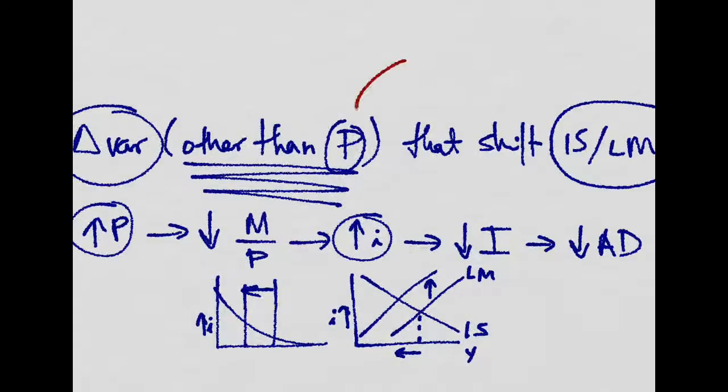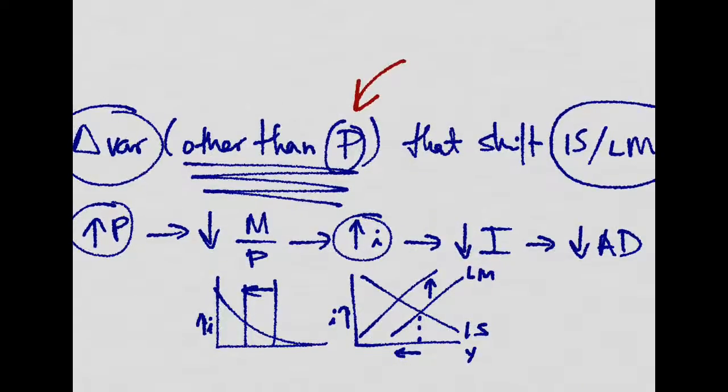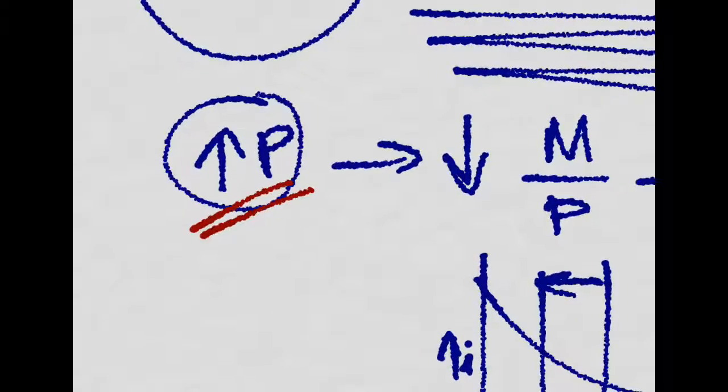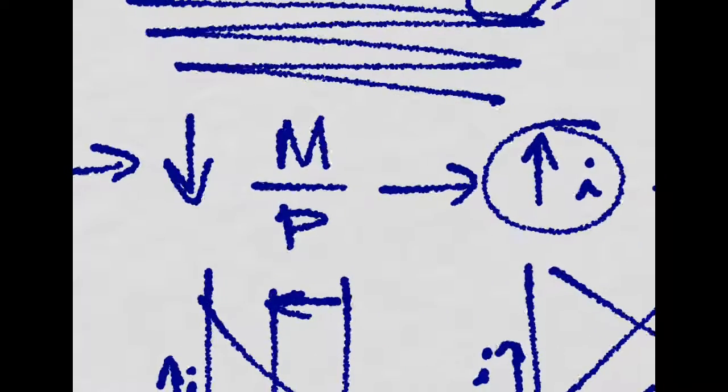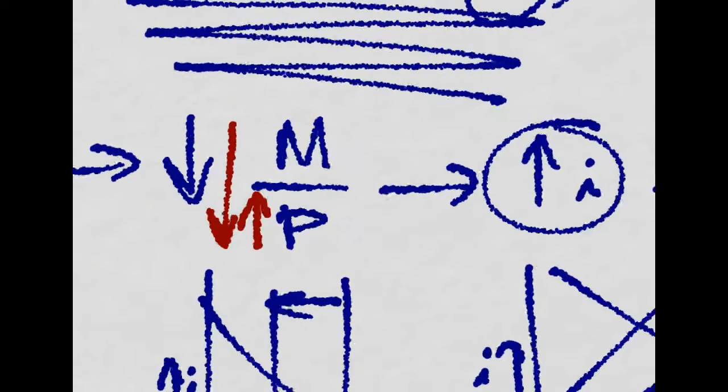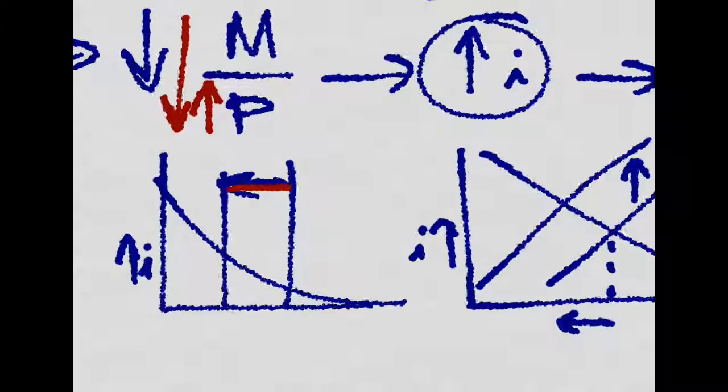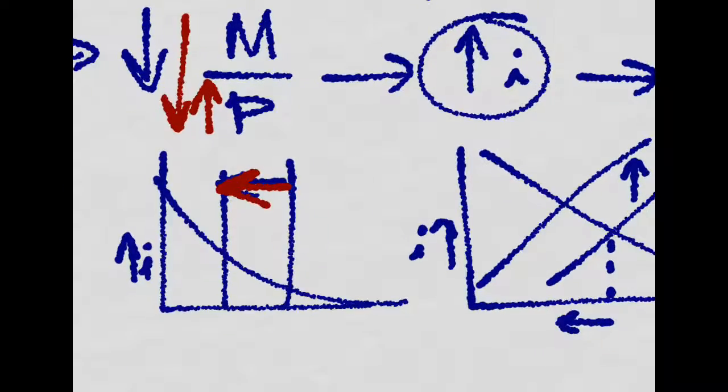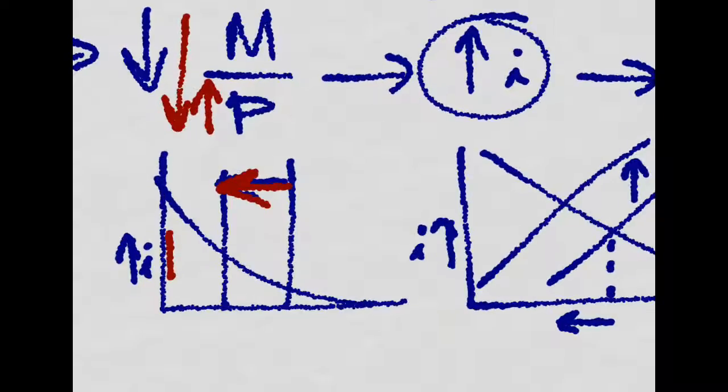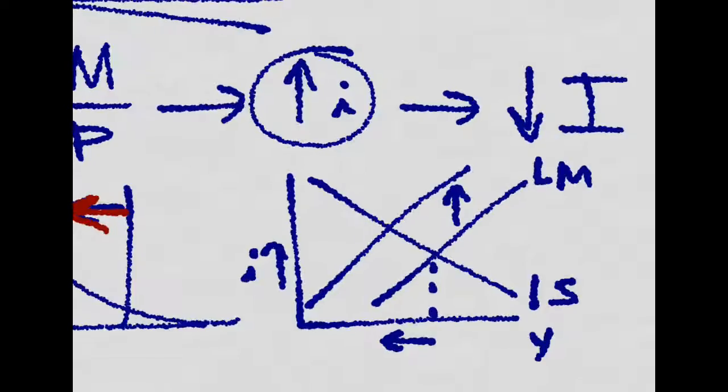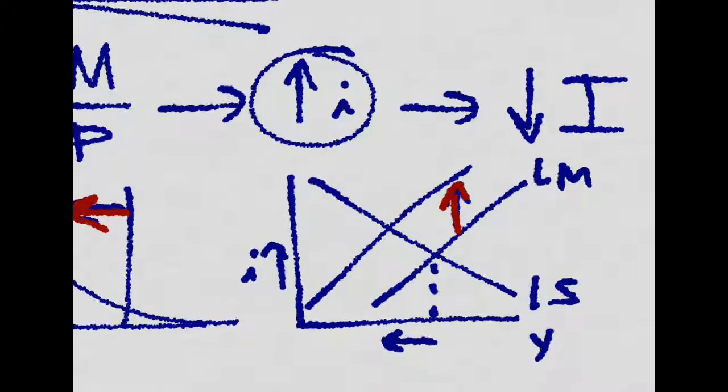I say other than prices because if we, for example, increase the price level, then that will decrease the overall real money stock in the economy, the real money supply. And that is a shift to the left of this real money supply, which will increase the nominal interest rate. And that is just a shift up in the LM.